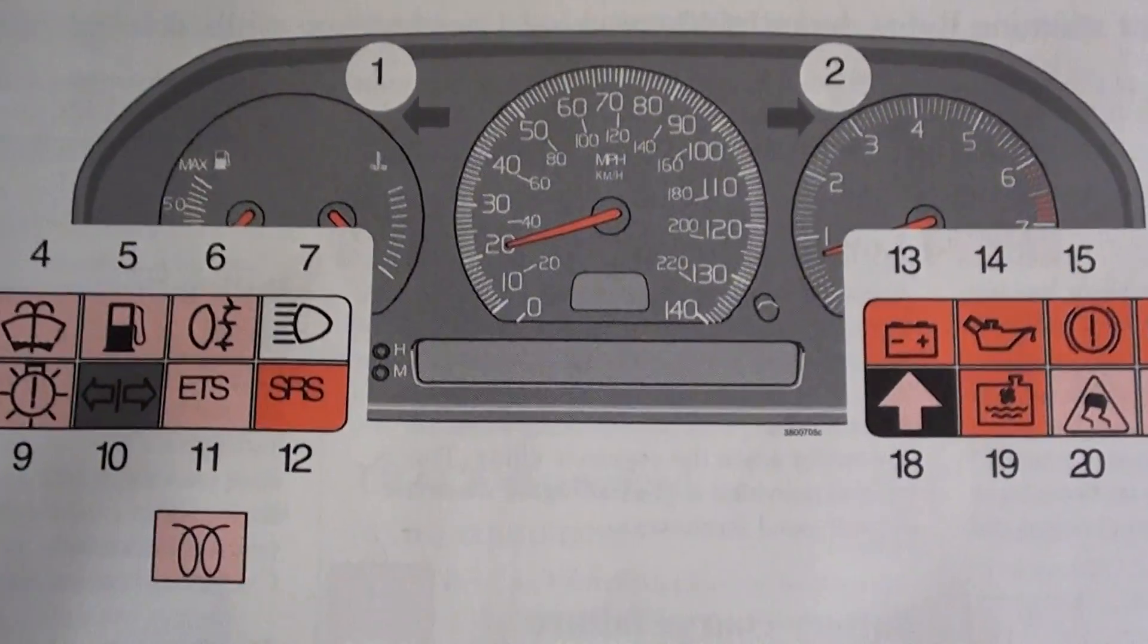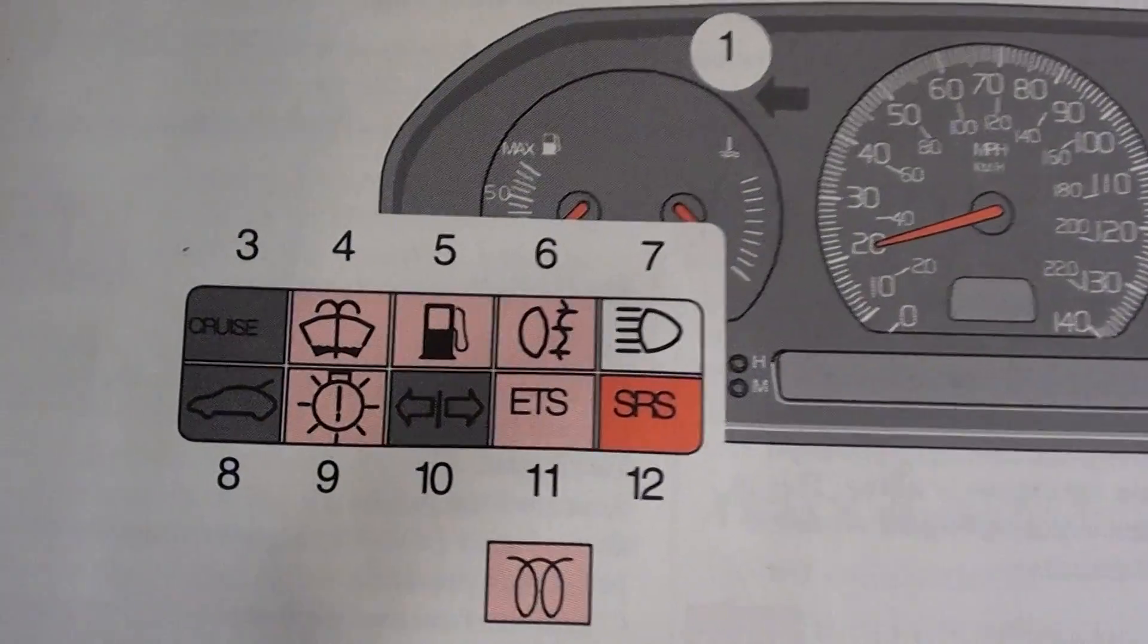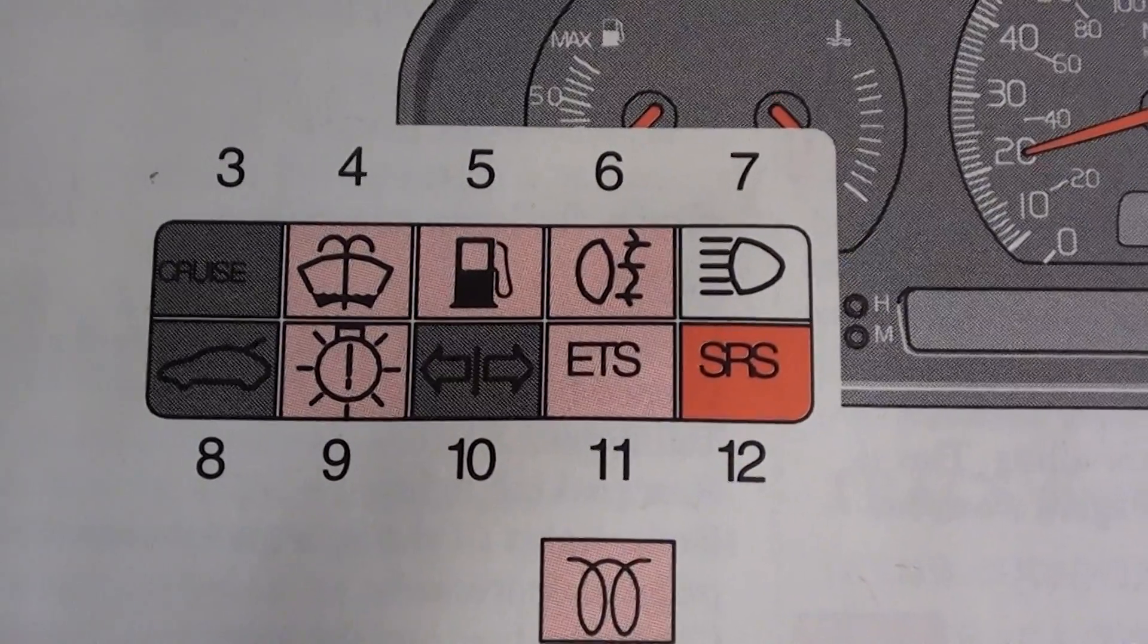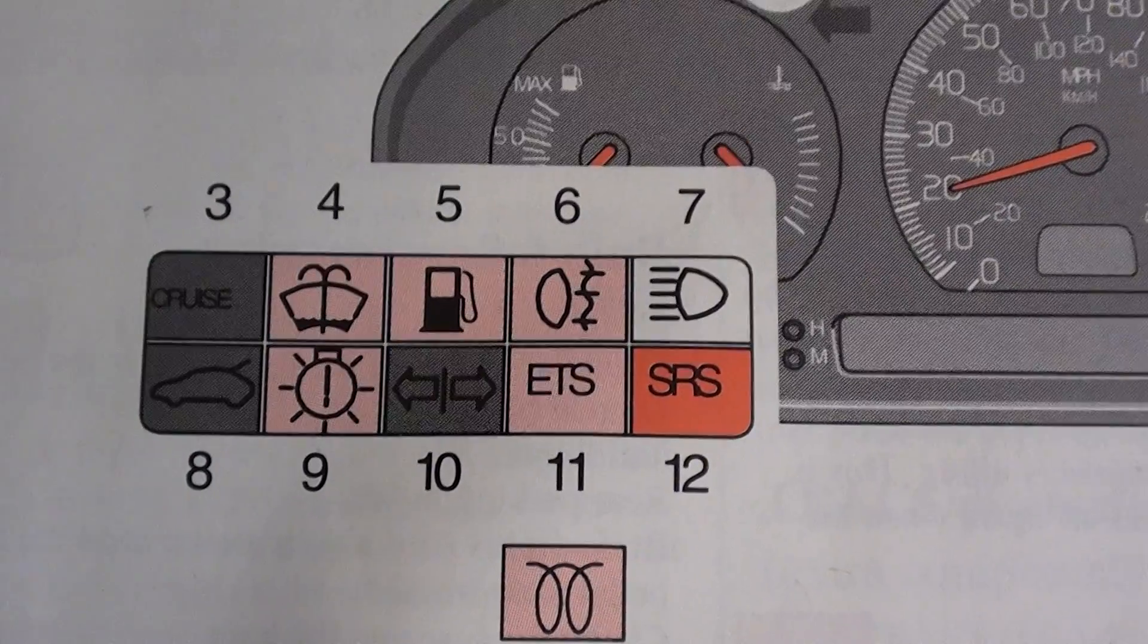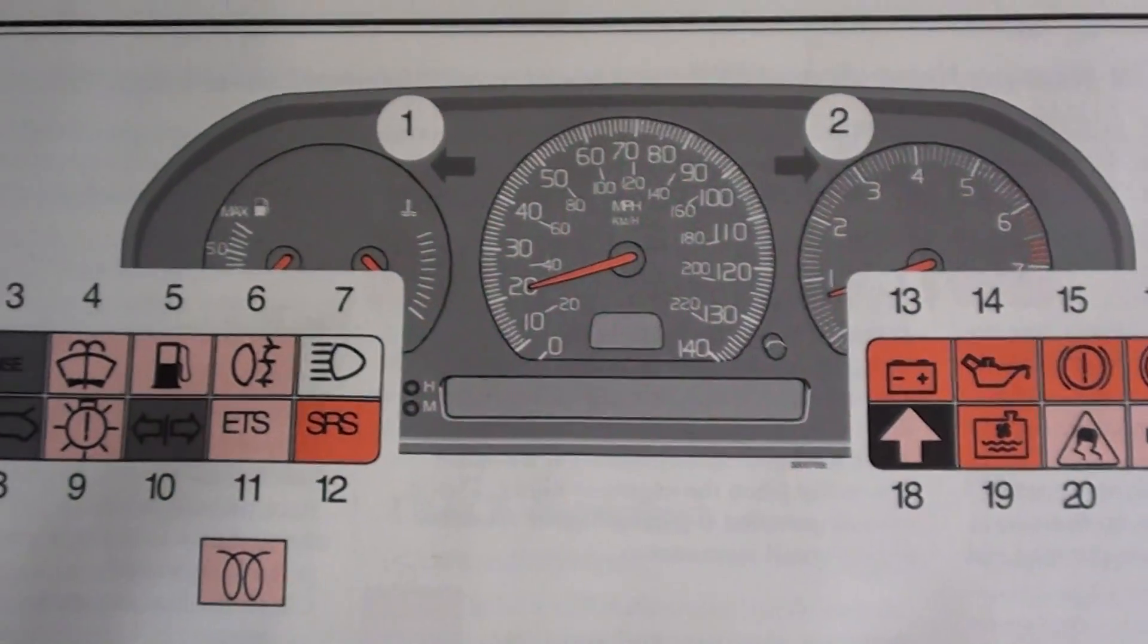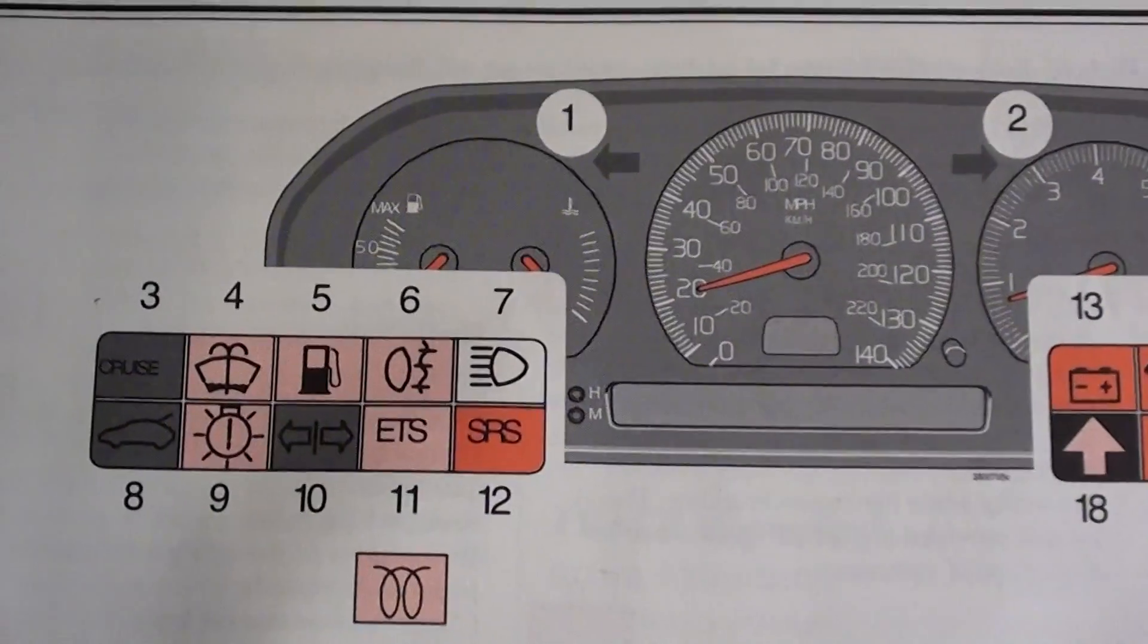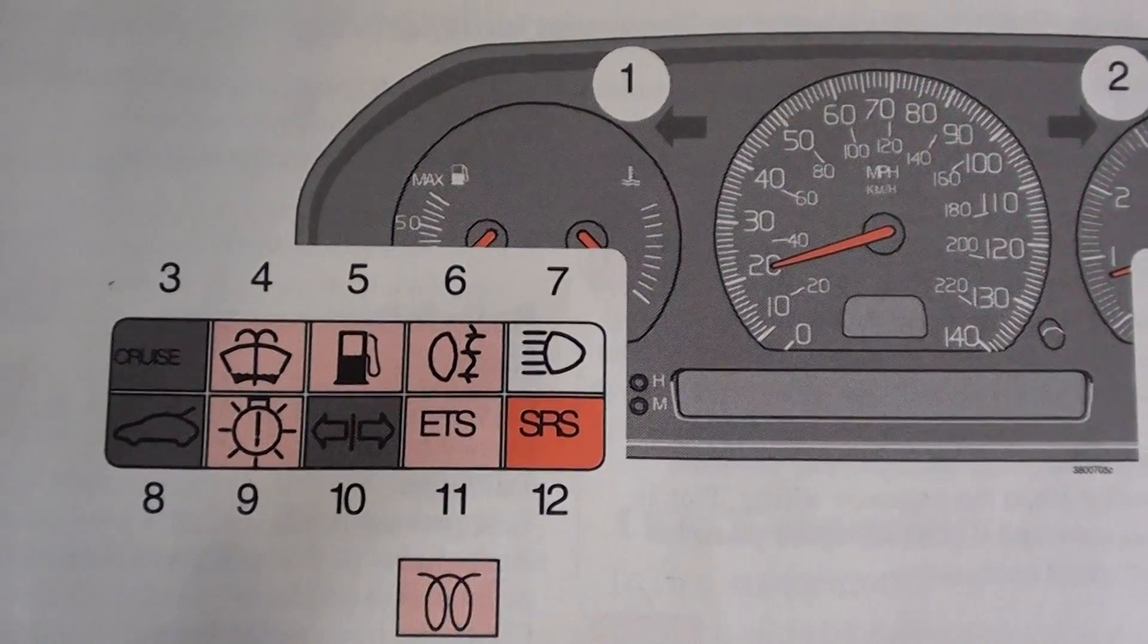The dashboards are the same on both vehicles. As you can see here, number 12 is the SRS light. That is the light which will show up on the dashboard when there is a problem within the airbag system.